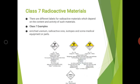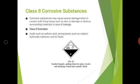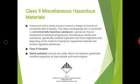The next is class 8, corrosive substances — those which can cause severe damage when they come in contact with living tissue such as skin, or which can damage or destroy surrounding materials. Examples include sulfuric acid and strong bases such as sodium hydroxide. Class 8 is also represented by its own symbol.